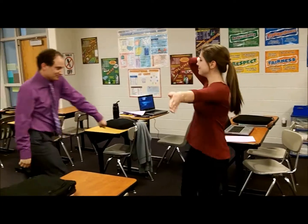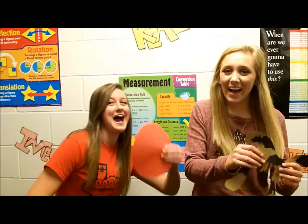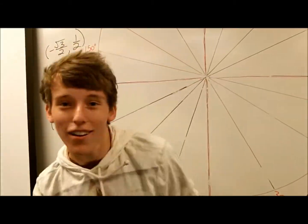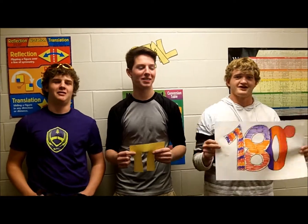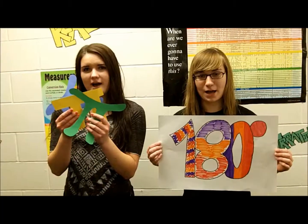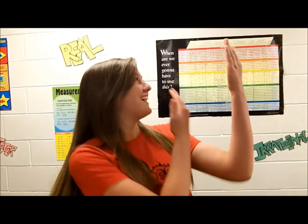If you want a decimal, I'll divide it, which gives 0.73. Pi, pi, 180. Radians, pi, pi, 180.